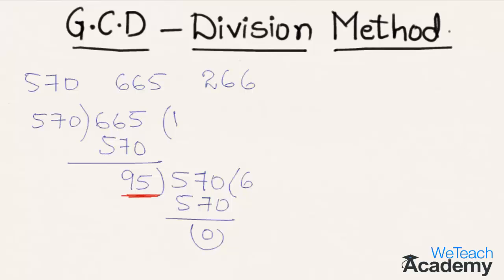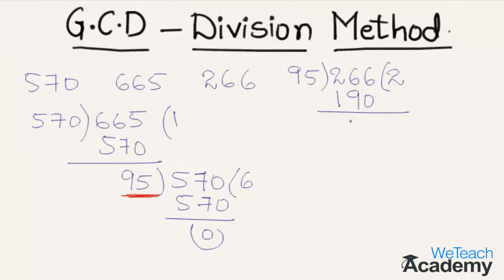Now let us find the greatest common divisor of 95 and 266. The larger number 266 is divided by 95. Here 95 two times is 190, and by subtracting we get 76 as the remainder. Now dividing 95 by the remainder 76, we get 76 one time is 76. By subtracting 76 from 95 we get 19 as the remainder.